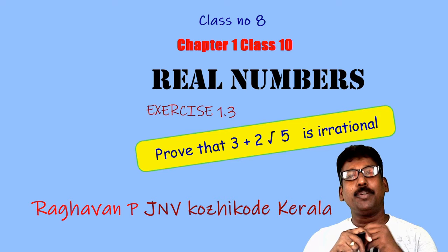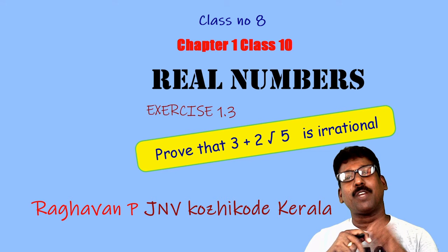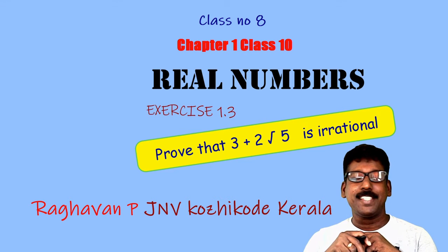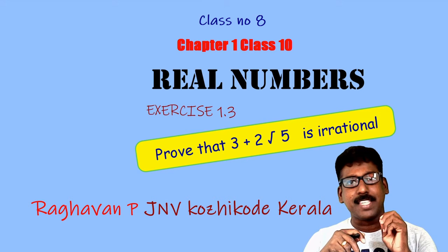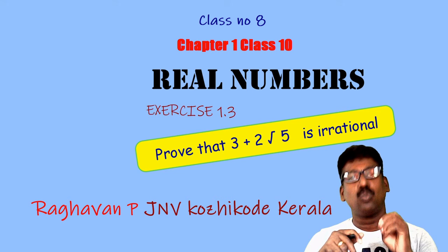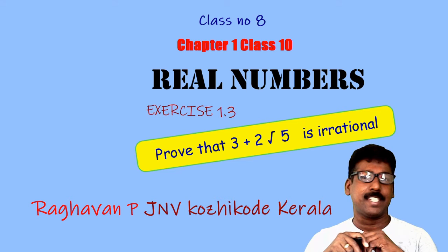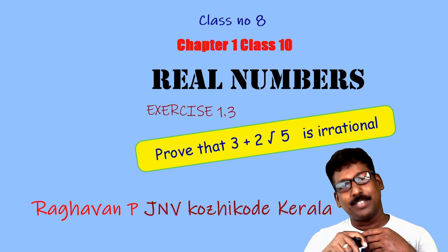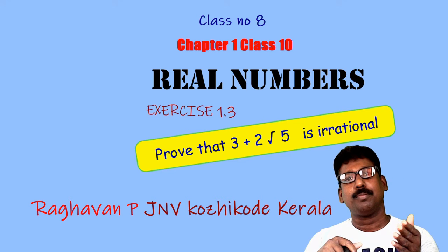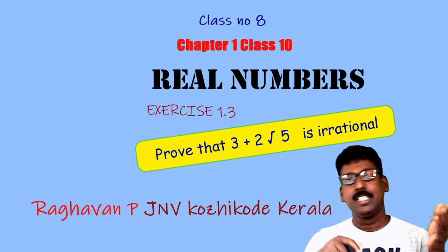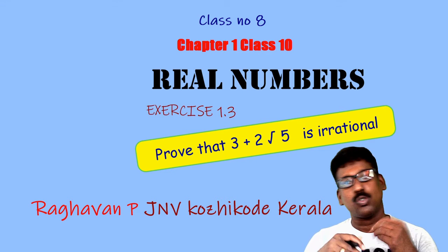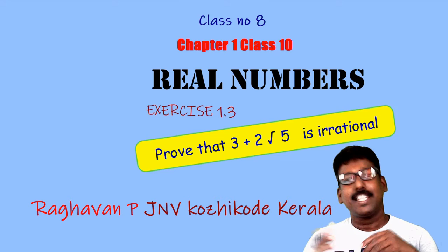Hi everyone, welcome to my 8th class of chapter 1 Real Numbers, class 2. In this class I am going to discuss a question from exercise 1.3 — prove that 3 plus 2 root 5 is irrational. In the last class we discussed how to prove root 2 is irrational. In the same way, by the method of contradiction, we can prove 3 plus 2 root 5 is also an irrational number. Let us see how it is.